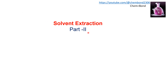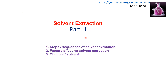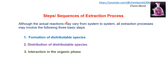Part 2 of solvent extraction will cover: steps or sequence of solvent extraction, factors affecting solvent extraction, and the choice of solvent. The actual practice of the solvent extraction will vary from system to system, but all extraction processes may involve the following three basic steps. First is the formation of distributable species, second is the distribution of distributable species between two phases, and third is interaction in the organic phase.